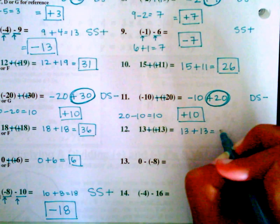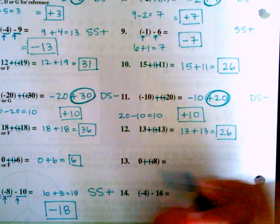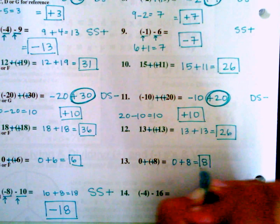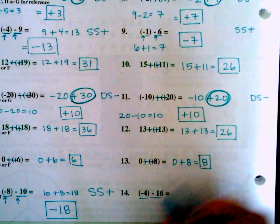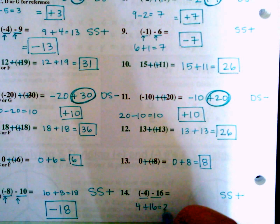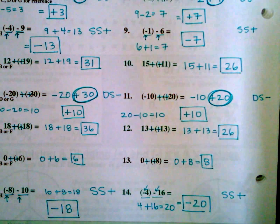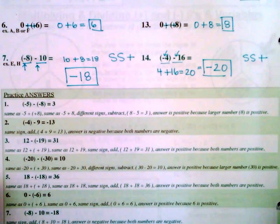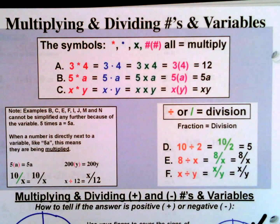Number twelve: thirteen minus negative thirteen — minus negative becomes plus positive, so thirteen plus thirteen equals twenty-six. Number thirteen: zero minus negative eight — plus positive, so zero plus eight equals eight. Number fourteen: negative four minus sixteen — same sign, add: four plus sixteen equals twenty, and both are negative so the answer is negative twenty. The answers are explained in detail in the book below the practice section. Next topic on page eight: multiplying and dividing numbers and variables.